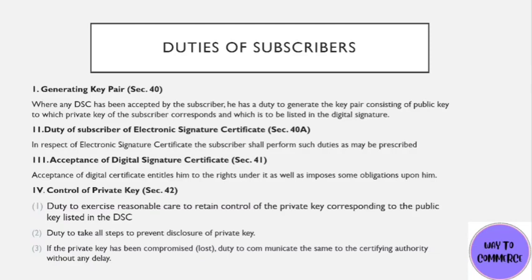If the private key has been compromised — meaning lost — if you have lost the private key or if it may be misused, then it is the duty of the subscriber to inform the Certifying Authority without delay. Don't waste time. Inform them that your private key is gone or may be shared or misused, so that the digital signature certificate is not misused. This is the responsibility and duty of the subscriber.